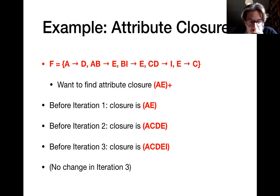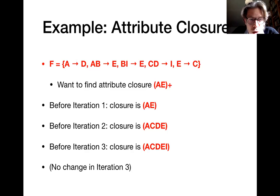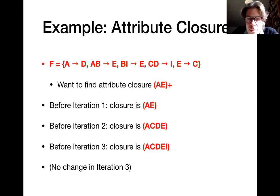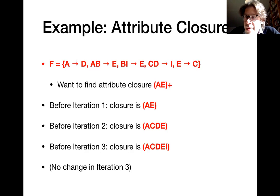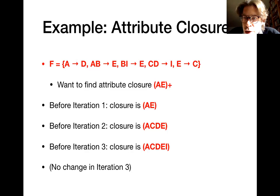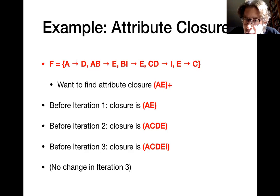After expanding, the attribute closure is now {A, C, D, E, I}. Going through the functional dependencies again: A,B implies E — but we don't know B; B,I implies E — we already have E and don't have B; C,D implies I — we already have that; E implies C — we already have that. Nothing changes anymore, and this is how we know we have converged. Further iterations would not expand the attribute closure, so we can stop the algorithm.